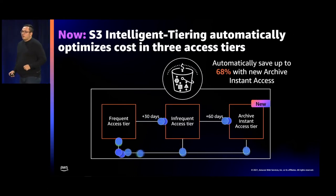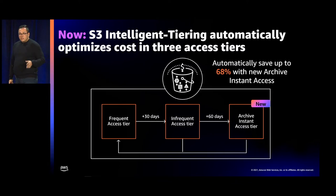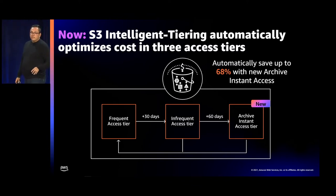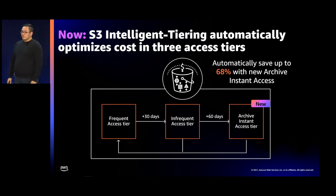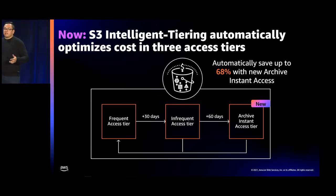Now with the introduction of the new archive instant access tier, Intelligent Tiering automatically optimizes between three access tiers. Any objects uploaded or transitioned to Intelligent Tiering are automatically stored in the frequent access tier. After 30 days of consecutive no access, you get 40% storage cost savings on those objects compared to the frequent access tier. And now, any objects not accessed for 90 consecutive days get 68% in storage cost savings relative to the infrequent access tier. For existing Intelligent Tiering customers, over the next coming days — probably today or tomorrow — you should see meaningful storage cost savings in your Cost Explorer reports for any objects not accessed for 90 consecutive days. There is absolutely no impact on performance and nothing you need to do differently.